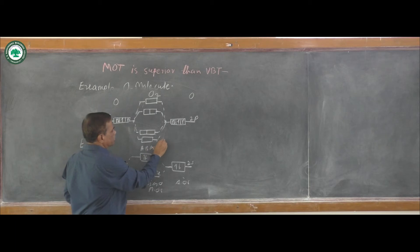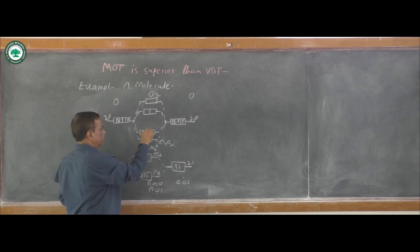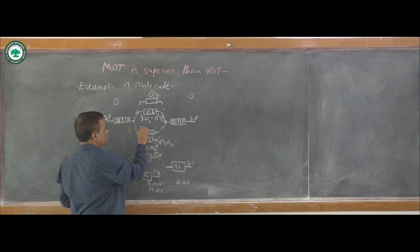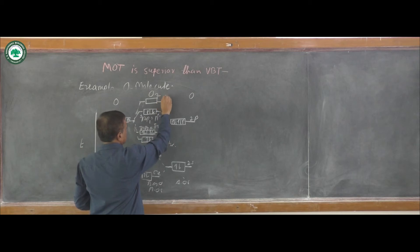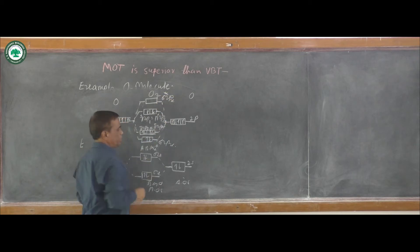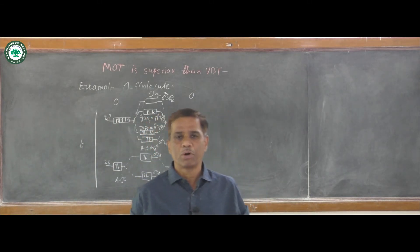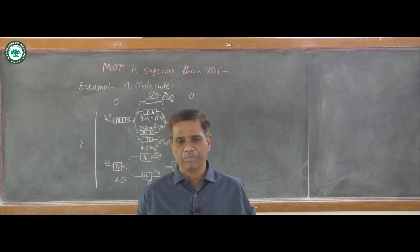The sigma 2px orbital contains 2 electrons out of the 8 total electrons. Then pi star 2py equals pi star 2pz, and pi 2py equals pi 2pz, and sigma star 2px orbital. This is the molecular orbital energy level diagram for the O2 molecule.